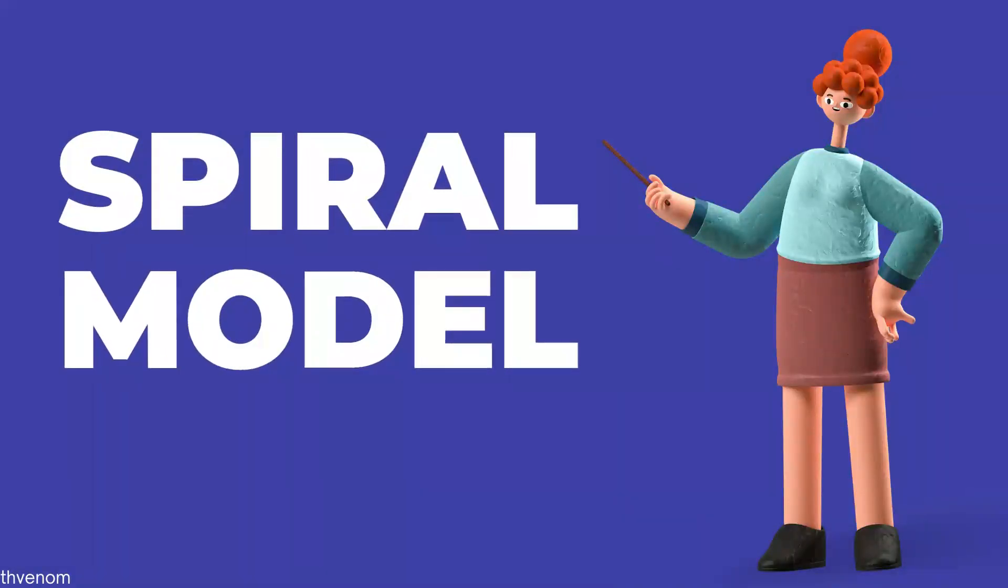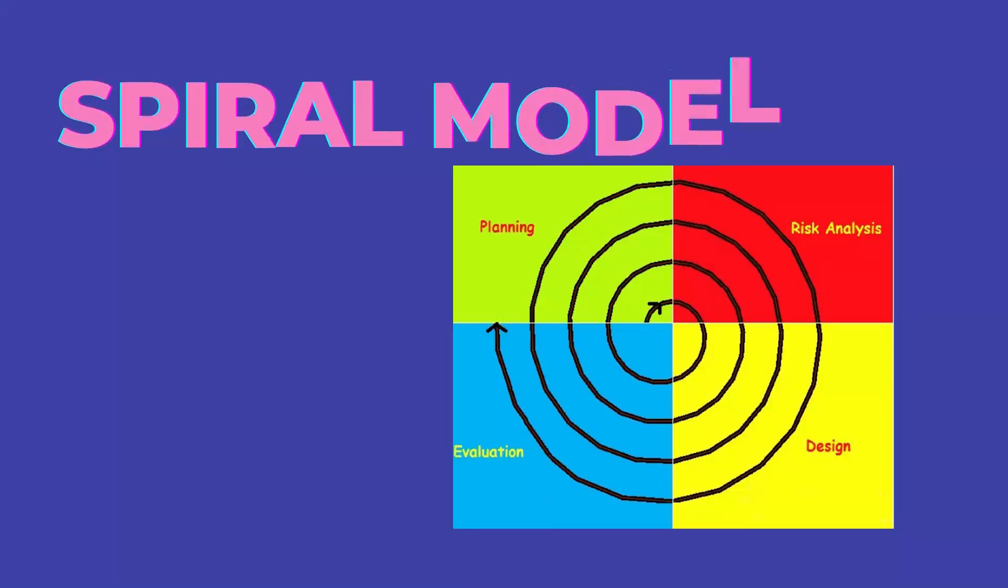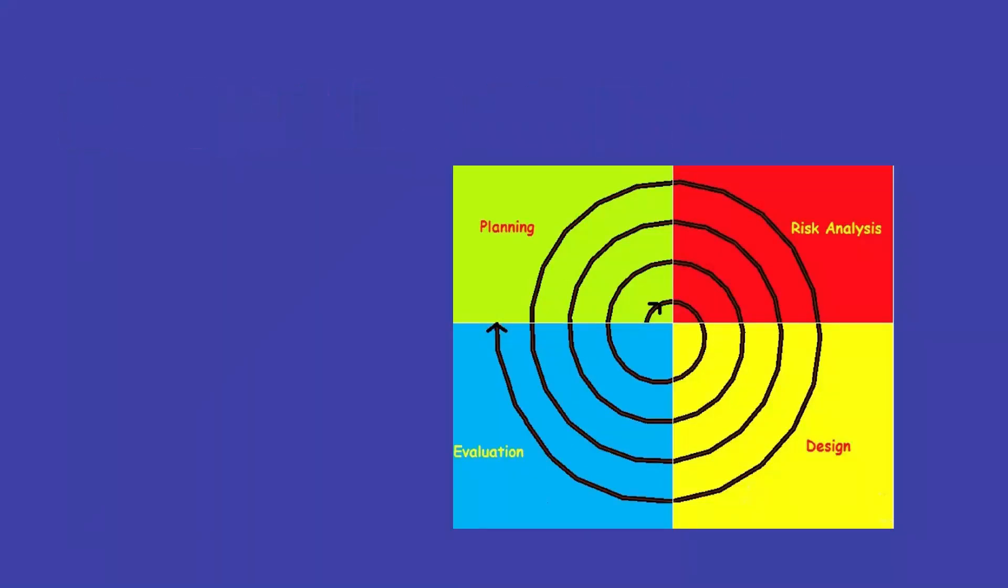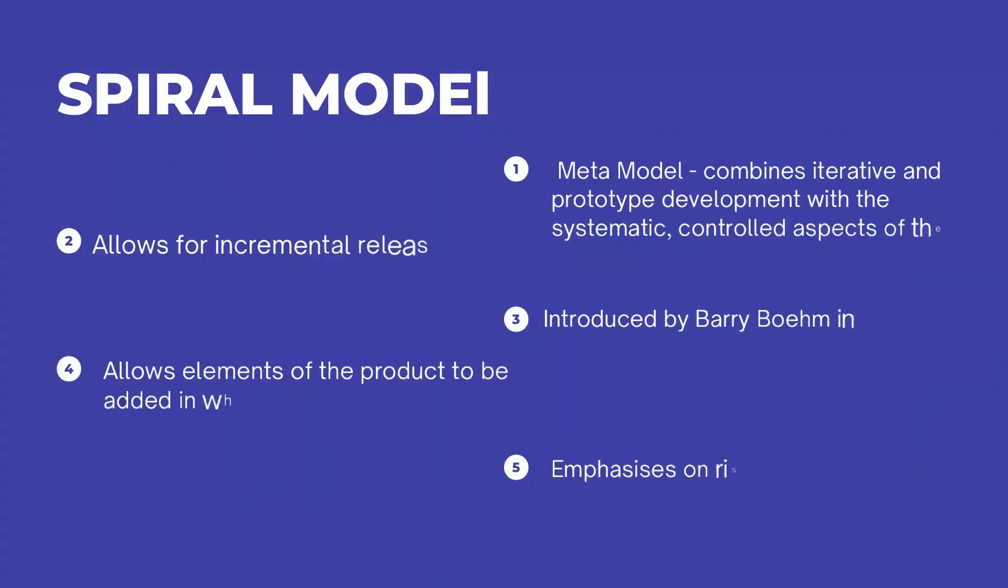The Spiral Model is also known as the Spiral Lifecycle Model. It is a systems development lifecycle (SDLC) model used in information technology.